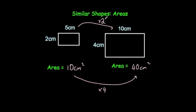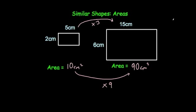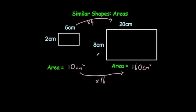Notice the pattern here. When the scale factor is 2, areas multiply by 4 — 2 squared is 4. When it's 3, areas multiply by 9 — 3 squared is 9. When it's 4, areas multiply by 16 — 4 squared is 16. So when you multiply the sides by a number, you multiply the area by that number squared.